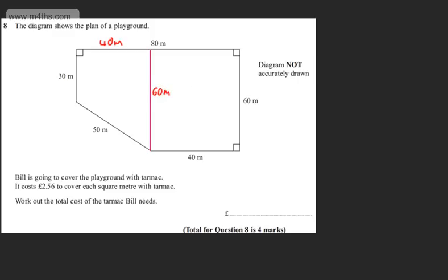So let's start off with the area of the rectangle. The area of this rectangle is simply going to be 40 multiplied by 60. That's going to give me now in square metres, 2,400 square metres. So that is the area of the rectangle.